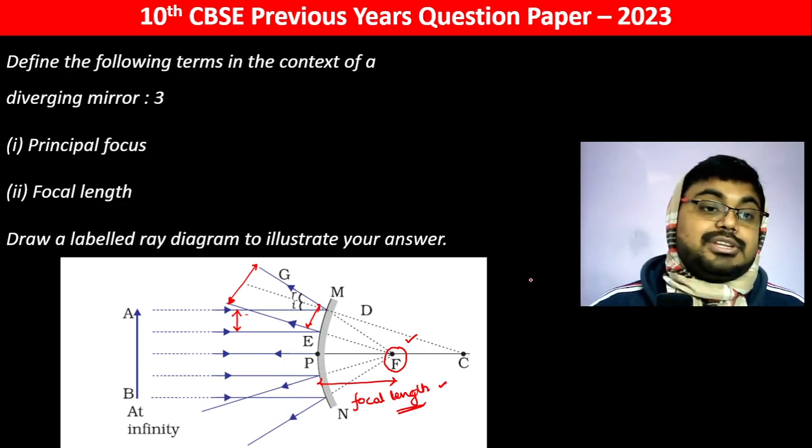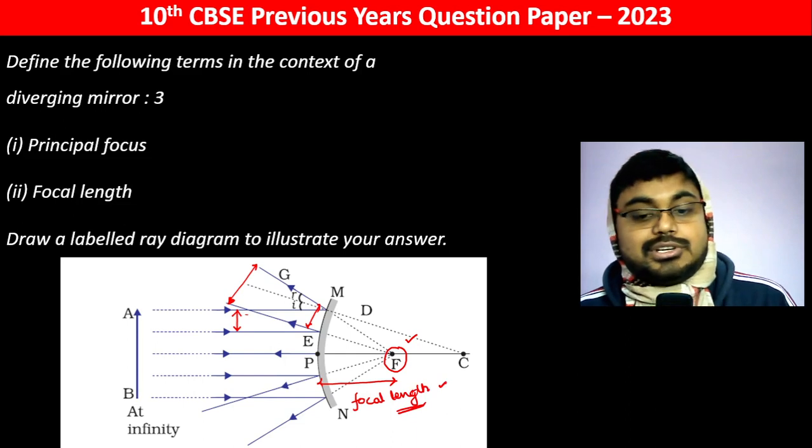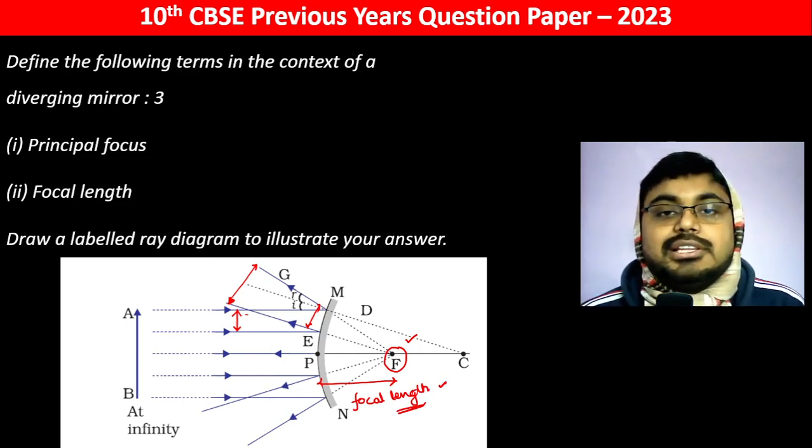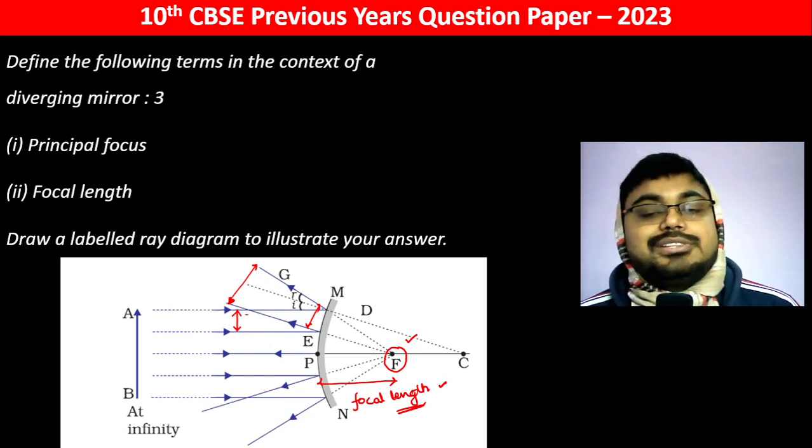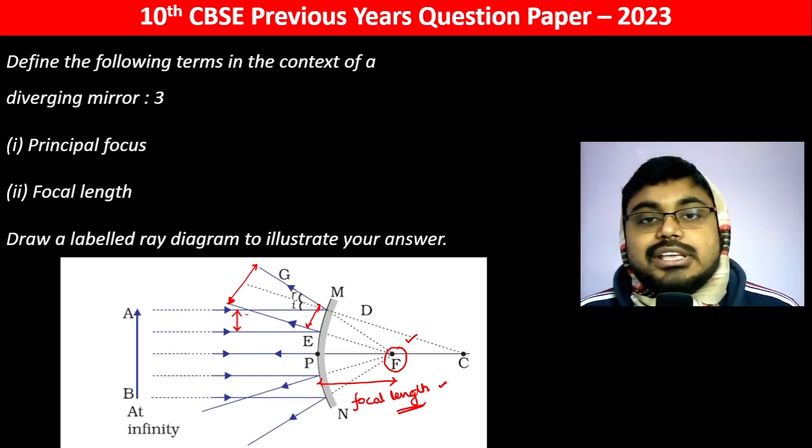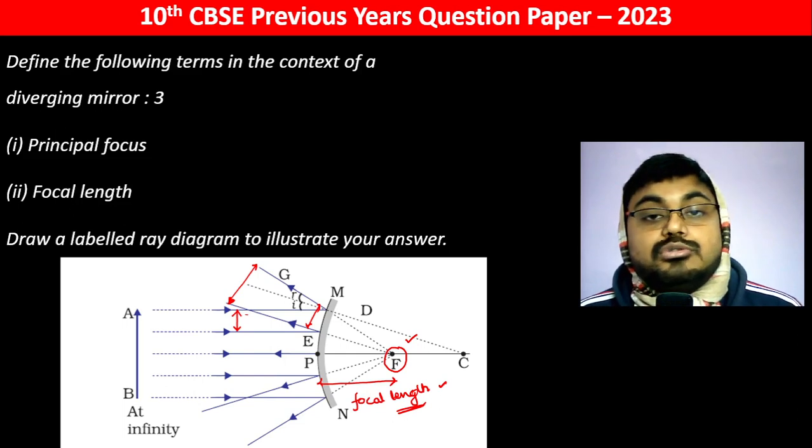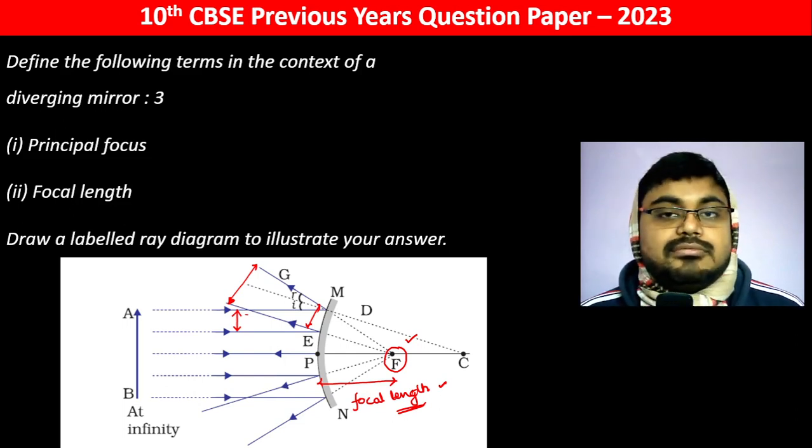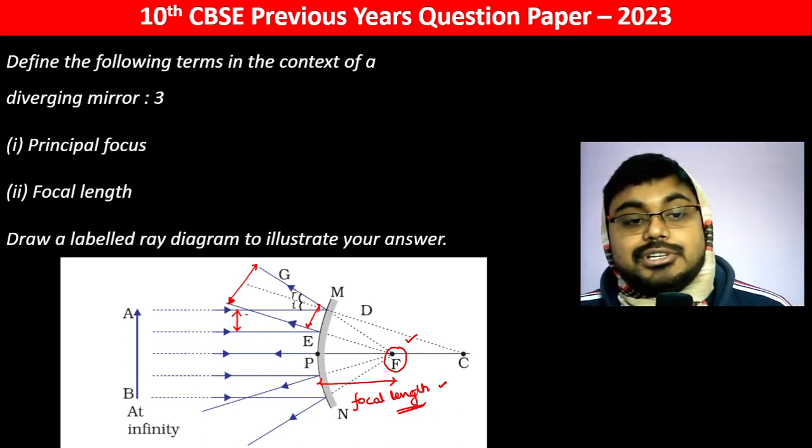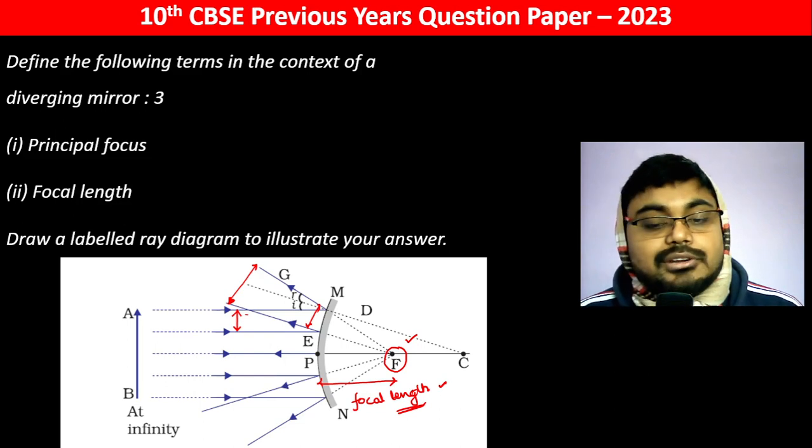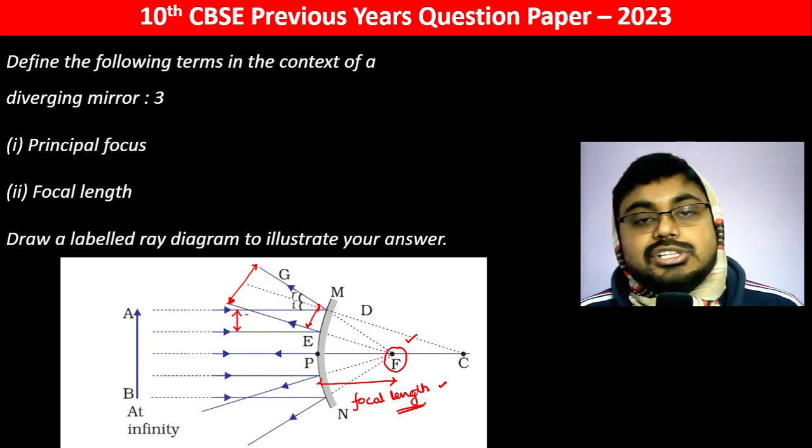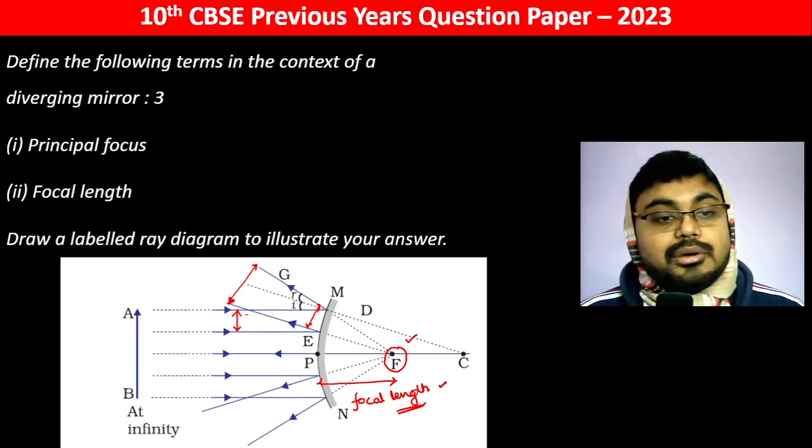The definition is that when the object is at infinity, all the rays appear to originate from the focus after reflection. There is a virtual image formed, and this point where all the rays appear to be meeting and originating from is known as the principal focus.